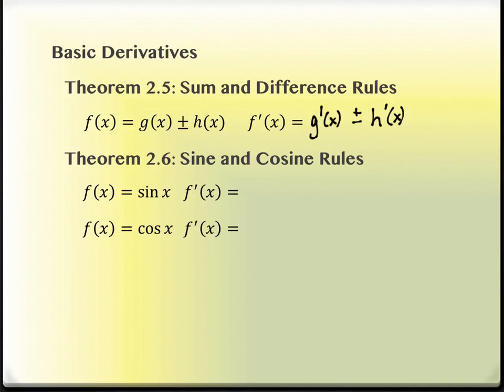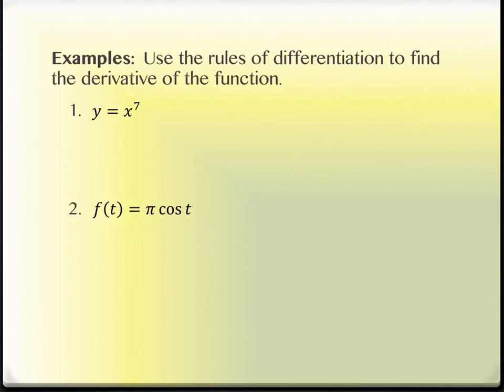Our next ones are sine and cosine. The derivative of sine is cosine. And the derivative of cosine is negative sine. Now we need some examples. So, x to the 7th. What would the derivative of x to the 7th be? 7x to the 6th. No limits. No h's. This is good news. Agreed? Quick stuff.